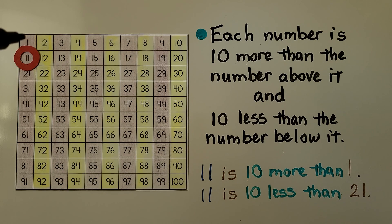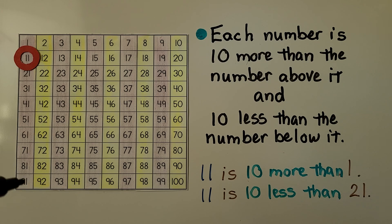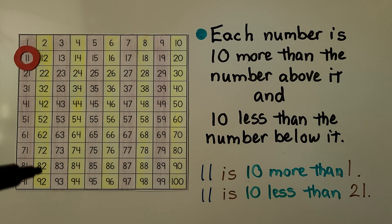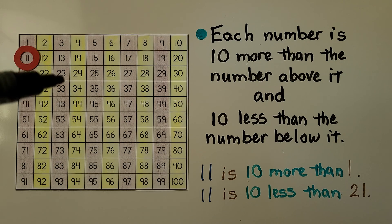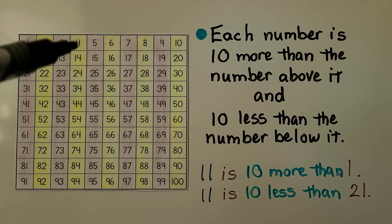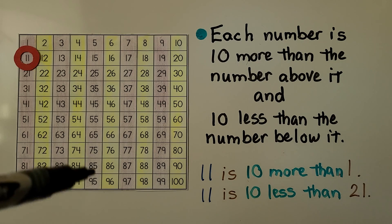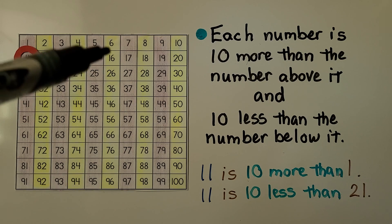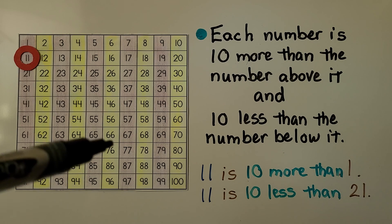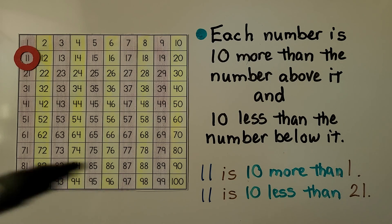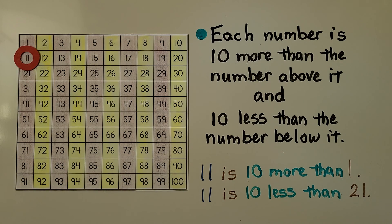Look at the pattern here. We have 1 and all these numbers end with a 1. Here we have a 2 and all these numbers end with a 2. We have a 3 and all of these end with a 3. Do you see the pattern? These all end with 4, these all end with 5, these all have 6 in the 1s place, 7s in the 1s place.